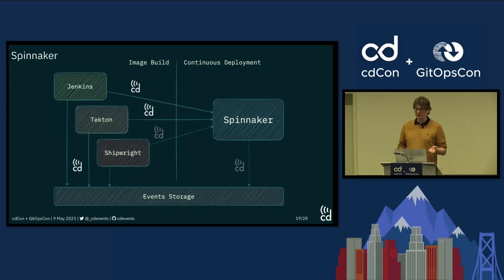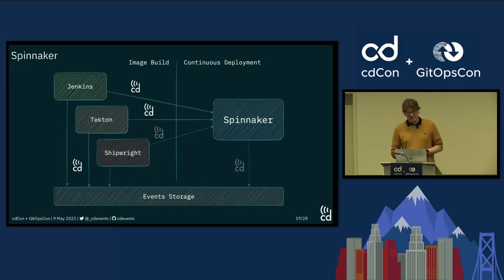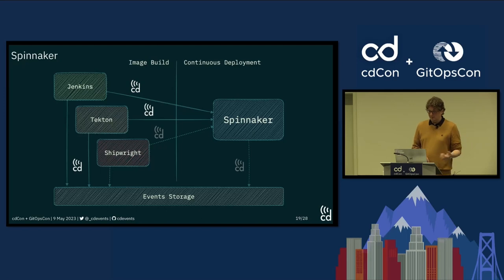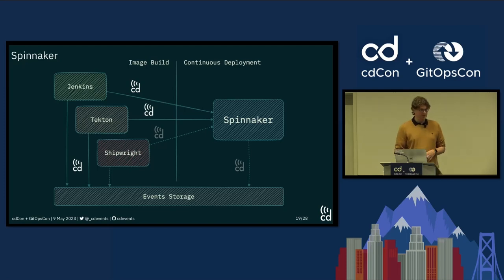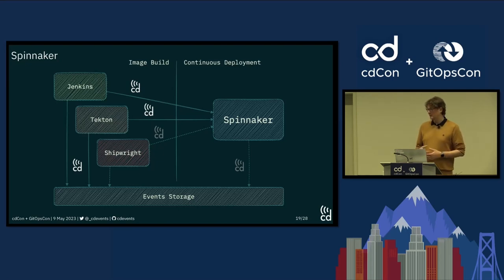Spinnaker is focused more on consuming events as a starting point. They have a very good infrastructure for incoming webhooks. The RFC today covers consuming CD Events as input to Spinnaker pipeline execution, and the next step will be to produce events as well. We've built POCs combining Tekton, Jenkins, and Spinnaker, where Jenkins and Tekton produce CD Events and Spinnaker consumes those to start a pipeline.